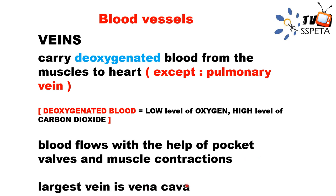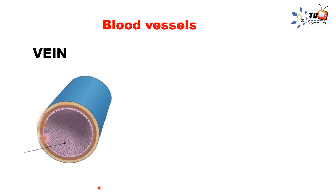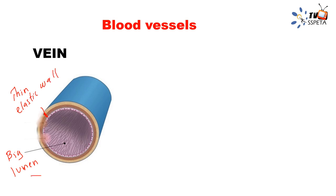The largest vein is the vena cava, found just before entering the right atrium. Looking at the vein diagram, you can see it has a very large lumen and a very thin elastic wall. This is because blood travels with low pressure in veins. Blood travels through veins with the help of valves and muscle contraction.